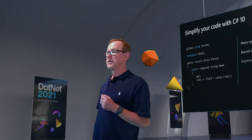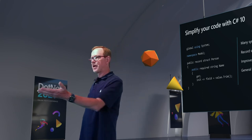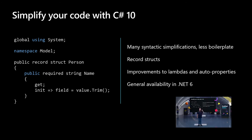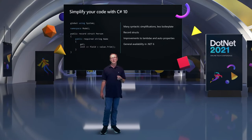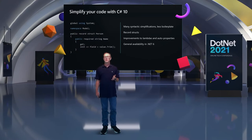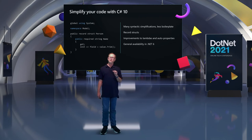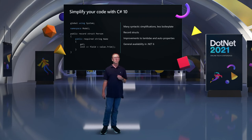Simplify your code with C# 10. Look at global using — most .NET applications start with a whole bunch of using statements. If you're putting the same ones in every single file, we can make them global so you don't have to do that anymore. We're also introducing records — a faster, simpler way of writing a class — and we've done work to make writing lambdas not require some of the typecasts needed before. Lots of work to make C# more concise and cleaner than ever, in C# 10.